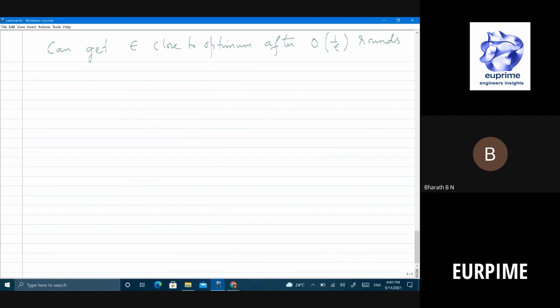If I run the algorithm order of 1 by ε times, I will be ε close to the optimum. Very easy to remember - ε, 1 by ε. Okay, you got the gist of this story, the big picture of what this result says?